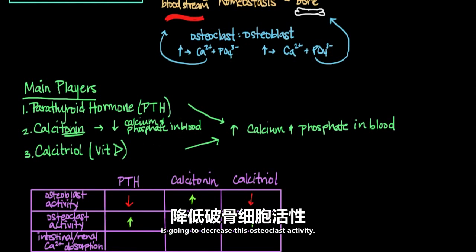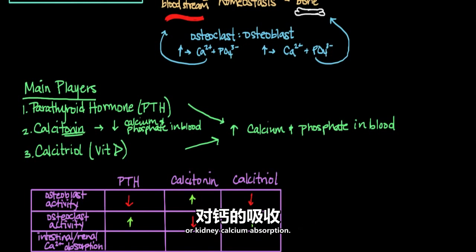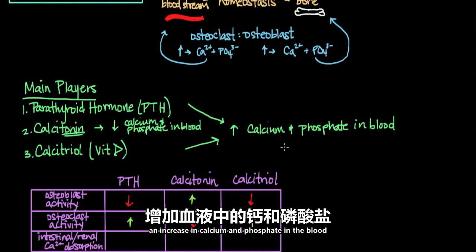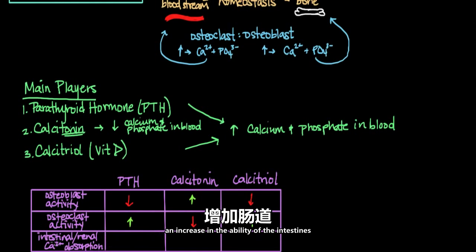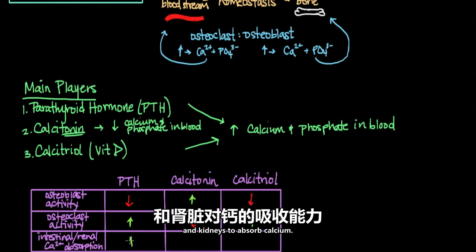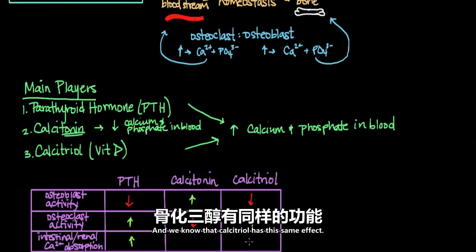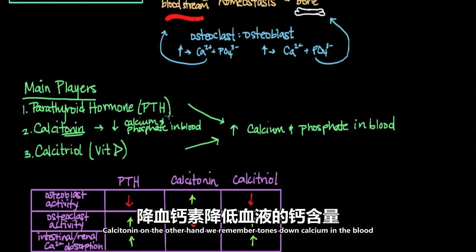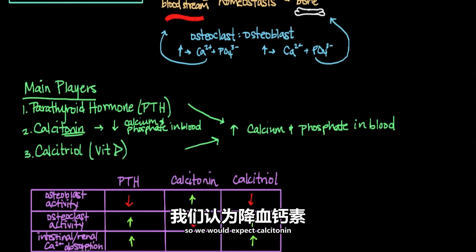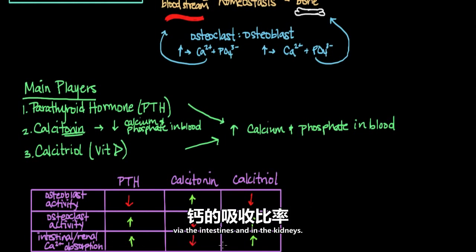Now for intestinal and renal calcium absorption: knowing that parathyroid hormone leads to an increase in calcium and phosphate in the blood, we would expect it to increase the ability of the intestines and kidneys to absorb calcium. Calcitriol has this same effect. Calcitonin, on the other hand, tones down calcium in the blood, so we would expect calcitonin to decrease the rate of calcium absorption via the intestines and kidneys.